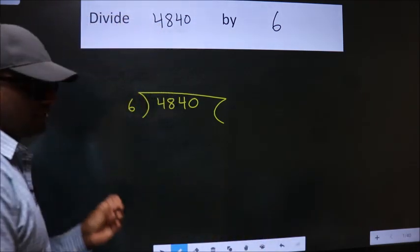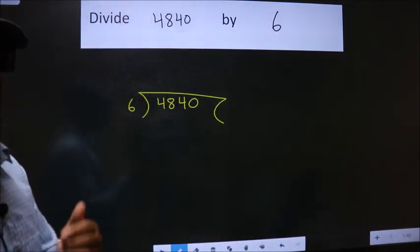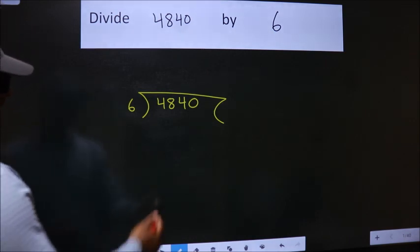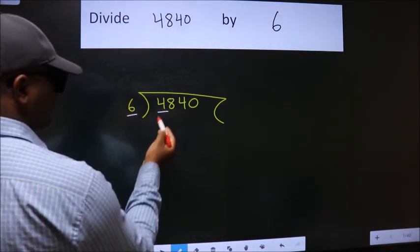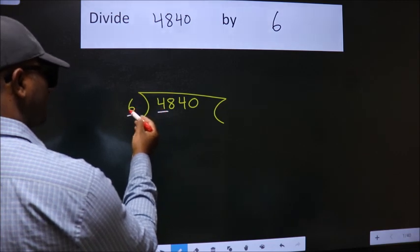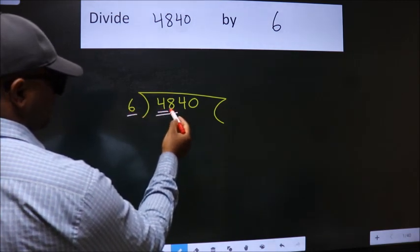This is your step 1. Next, here we have 4. Here 6. 4 is smaller than 6. So, we should take two numbers: 48.